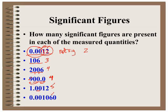The six and the one are significant. The leading zeros are not significant. There is a captive zero which is significant. And this zero is following a decimal but is not a leading zero, so it is also significant. That gives us one, two, three, four significant figures in this measurement.